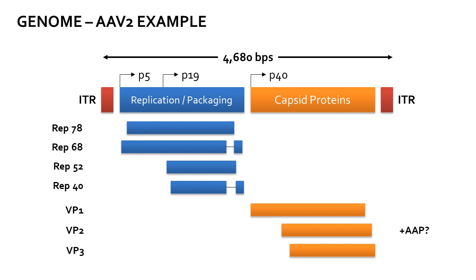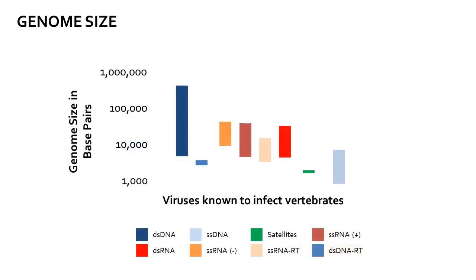The two genes have three promoters. The expression of various messenger transcripts is variable during the infection cycle, and has been shown to vary based on the presence and activity of the helper virus required for AAV replication. As you can see from this graph depicting the genome size of various viral classes known to infect vertebrates, the AAV, a single-stranded DNA virus, has a relatively small, but far from the smallest, genome. The encapsulation process has been extensively characterized both in vitro and in vivo, with many studies demonstrating that the approximately 4,700 base pair genome limit cannot be significantly exceeded without impacting either the encapsulation or replication of the virus.